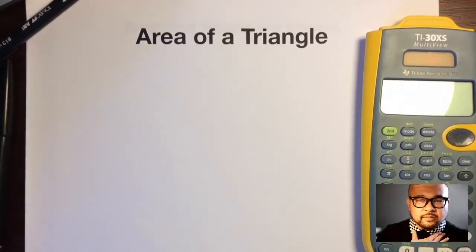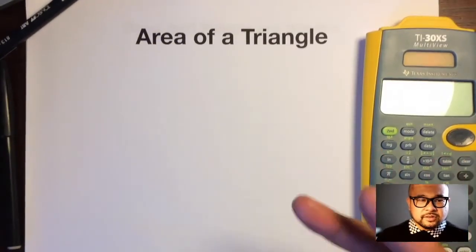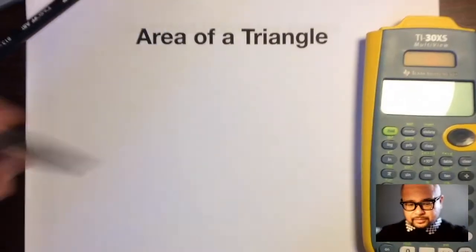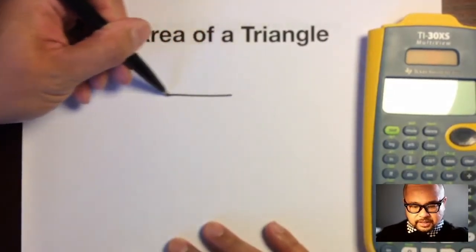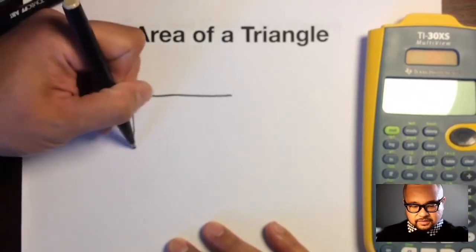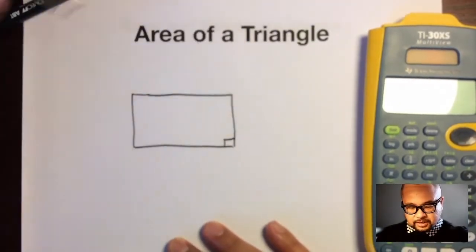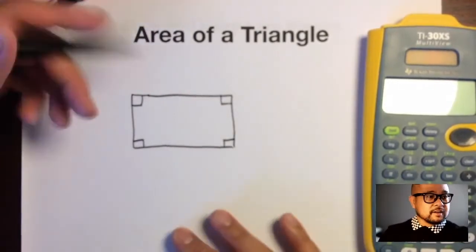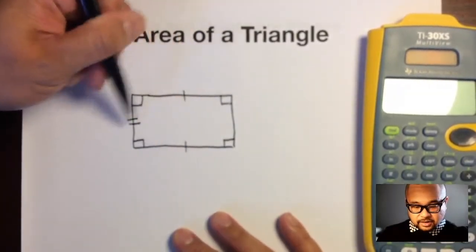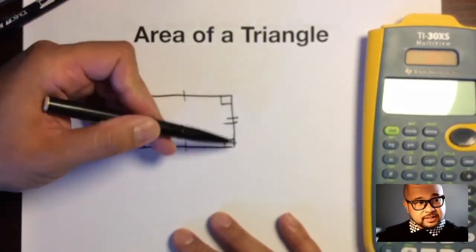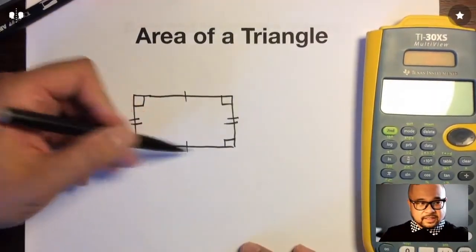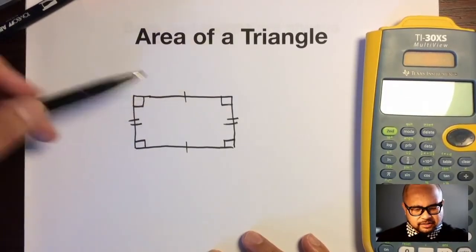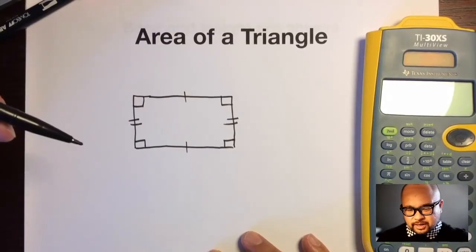I'm still wearing my checkered shirt because I'm still going to teach you about area. In our last episode I taught you about area of a rectangle, but this is area of a triangle. Let's draw a rectangle — a shape where all four angles are 90 degrees and opposite sides are congruent. So this side is the same length as this side, and this side is the same length as this side.